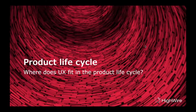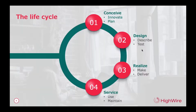So where does UX fit in the product lifecycle? In a simplistic way, we can break the product lifecycle up into four parts. We have the conceive stage, which is the innovation and planning of a product or a service. Within this stage, UX can facilitate an understanding of viability — for example, is there a demand for the product or service? What might be out there already?